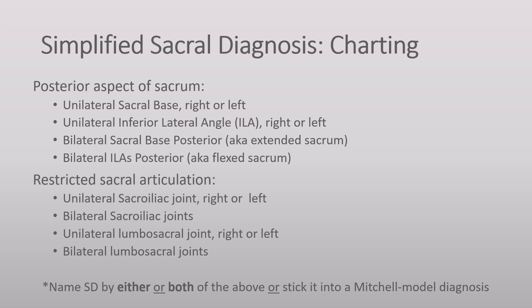Some might protest that one should label the dysfunction as the part of the sacrum that is most restricted and state whether that part is anterior or posterior. And while I agree that would be a more precise and detailed diagnosis, I would counter that most schools and COMLEX have no problem with labeling a C1 dysfunction in the oversimplified terms of rotation — aka which transverse process is more posterior — instead of requiring a more nuanced diagnosis of which side of C1 is restricted and whether that side is anterior or posterior.